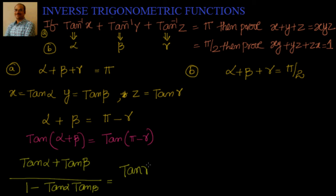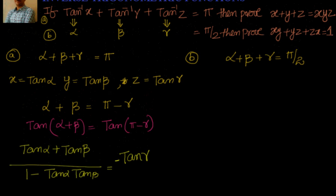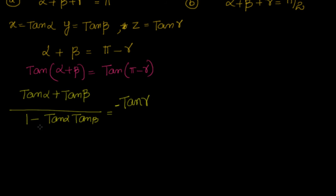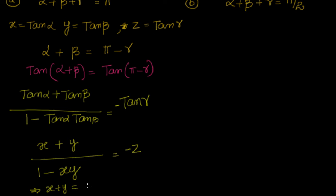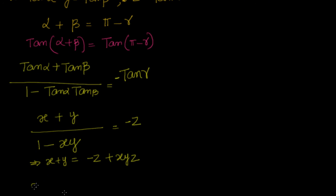We know that tan of pi minus gamma is equal to minus tan gamma. So you can write it as minus tan gamma. In the second quadrant, tan is negative, so this is minus. Now let's substitute the values of x, y, z. We will have x plus y by 1 minus xy equal to minus z. That gives us x plus y equal to minus z plus xyz, and bringing z to the left side, we have x plus y plus z equal to xyz.